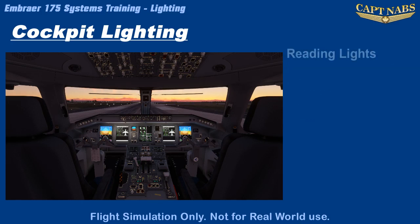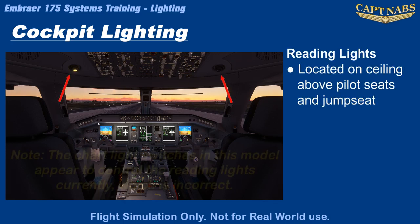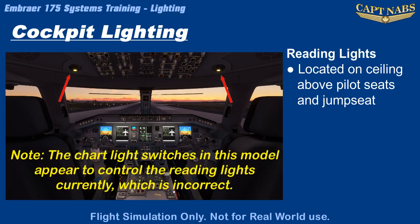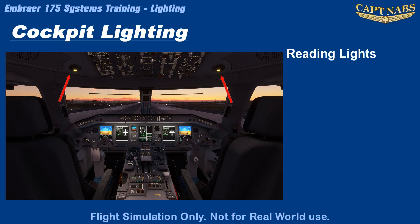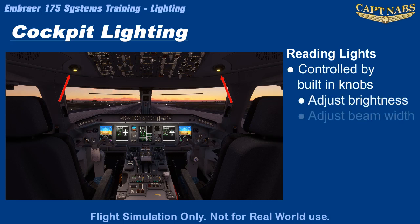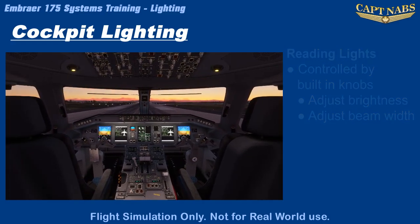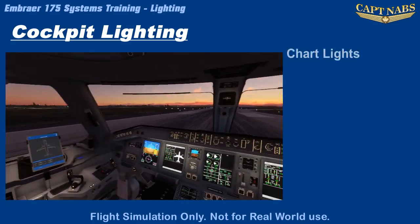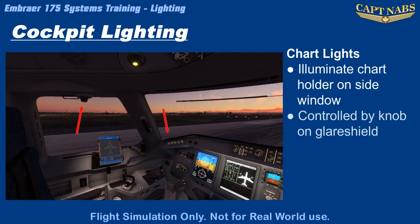A reading light is available to each pilot and to the jumpseat observer. The reading lights are located on the ceiling of the flight deck in an eyeball-type mount, which can be adjusted to aim them precisely where needed for reading checklists, manuals, etc. The reading lights have two concentric adjustment rings — one adjusts the brightness from full off to full bright, while the other adjusts the focus, allowing illumination of a large area or just a small area. The final light in the flight deck is the chart light, located just over the side window, shining down to illuminate the chart holder. Each chart light is controlled by a separate knob at the end of the glare shield.